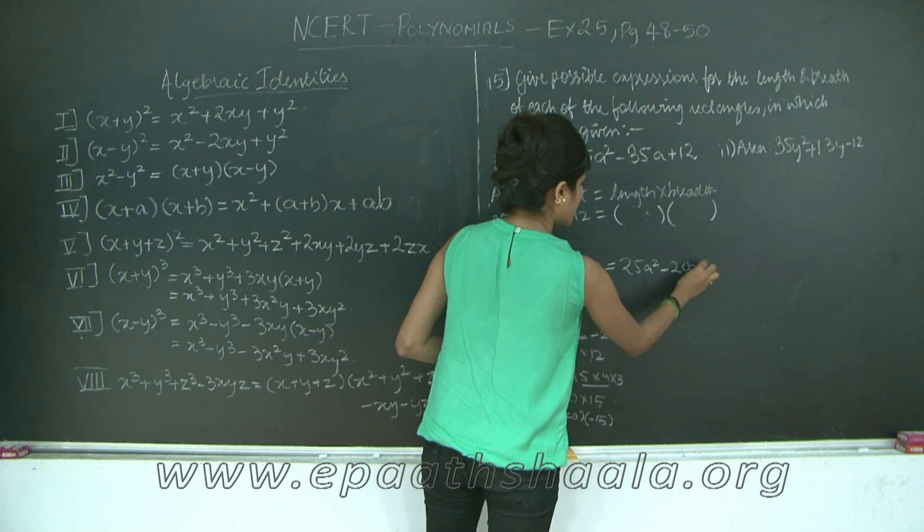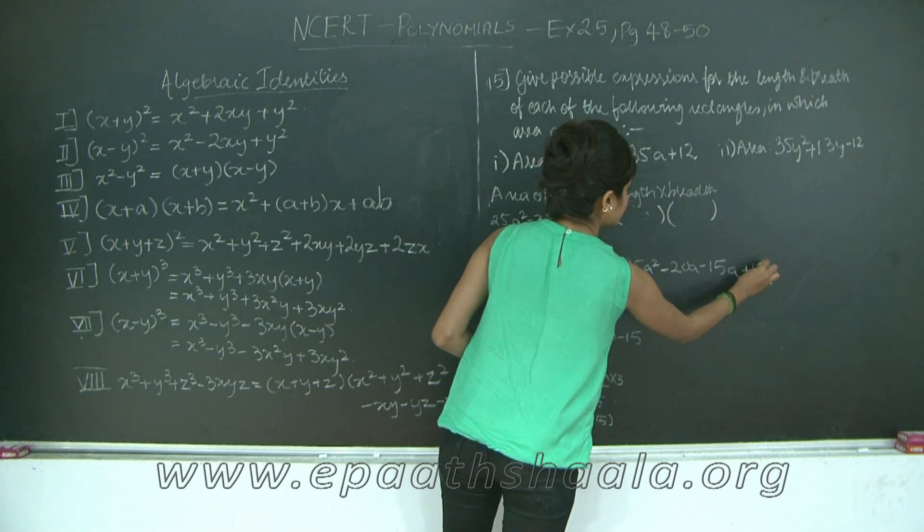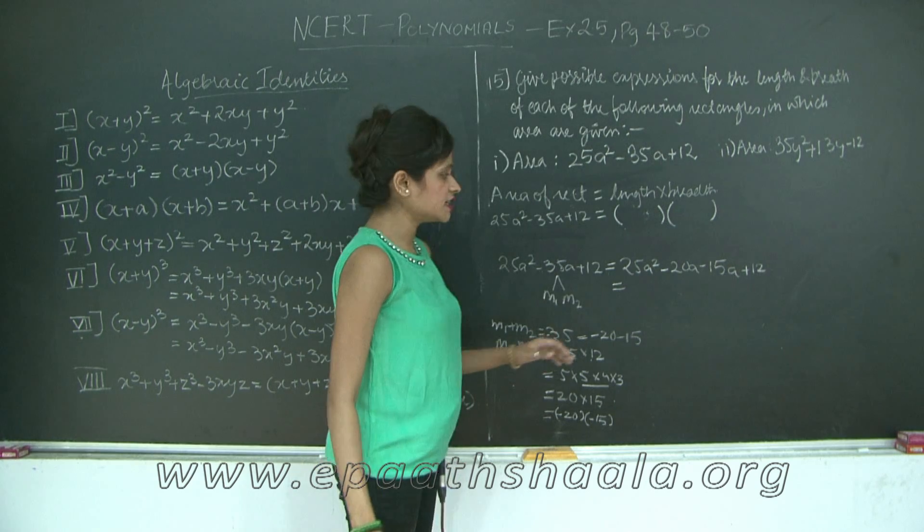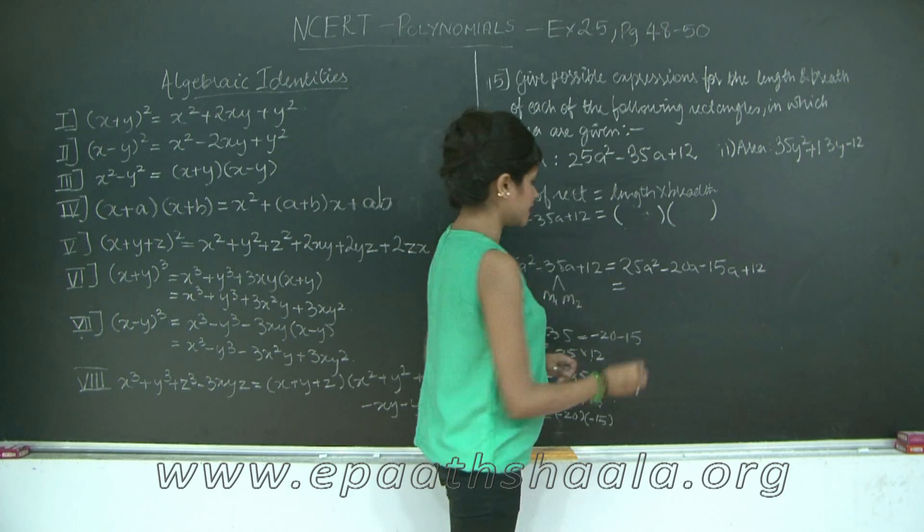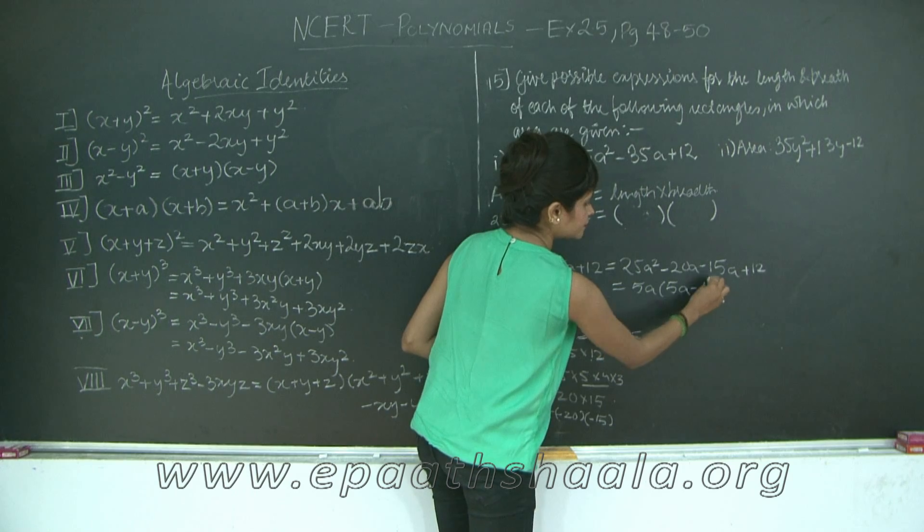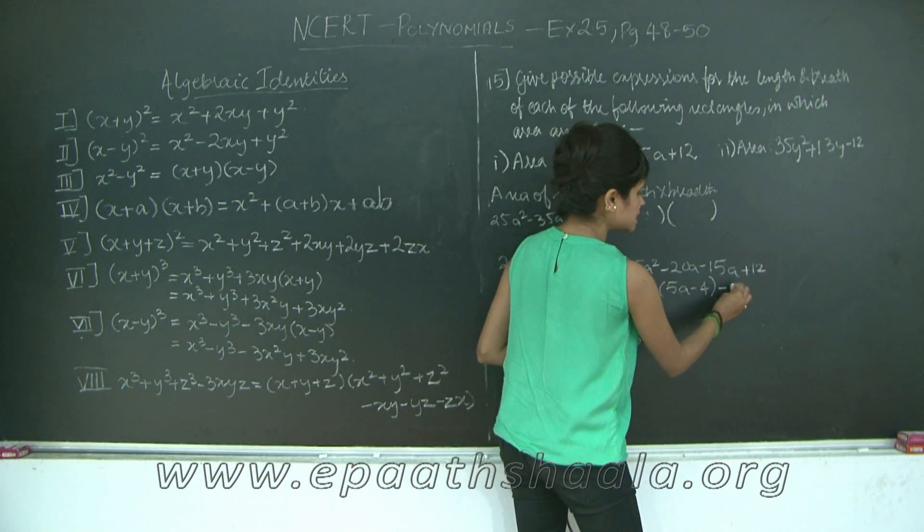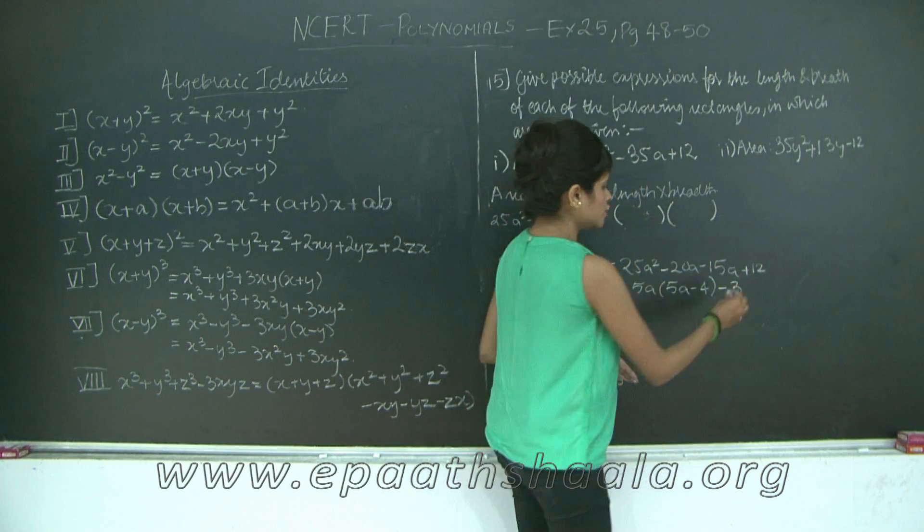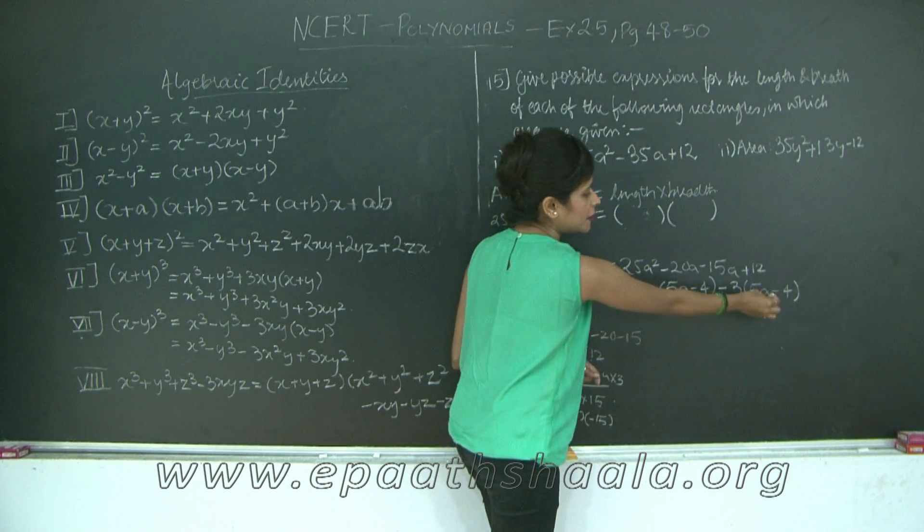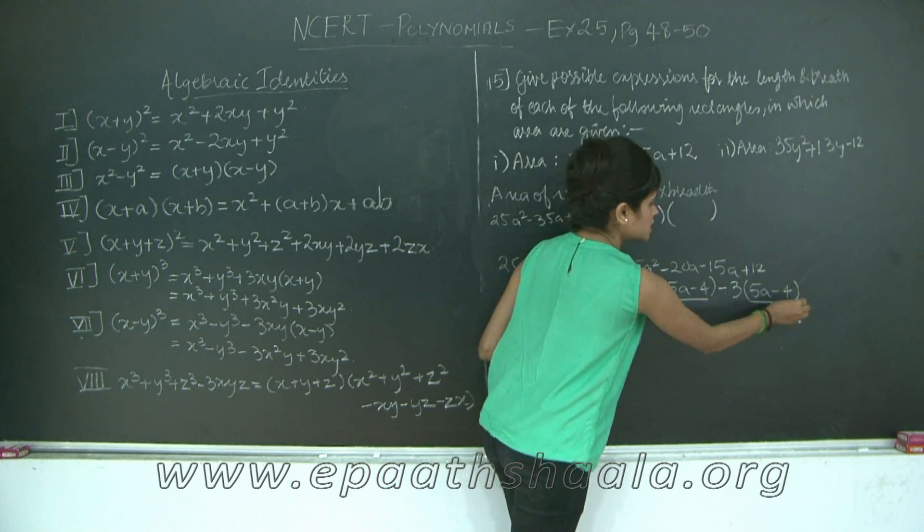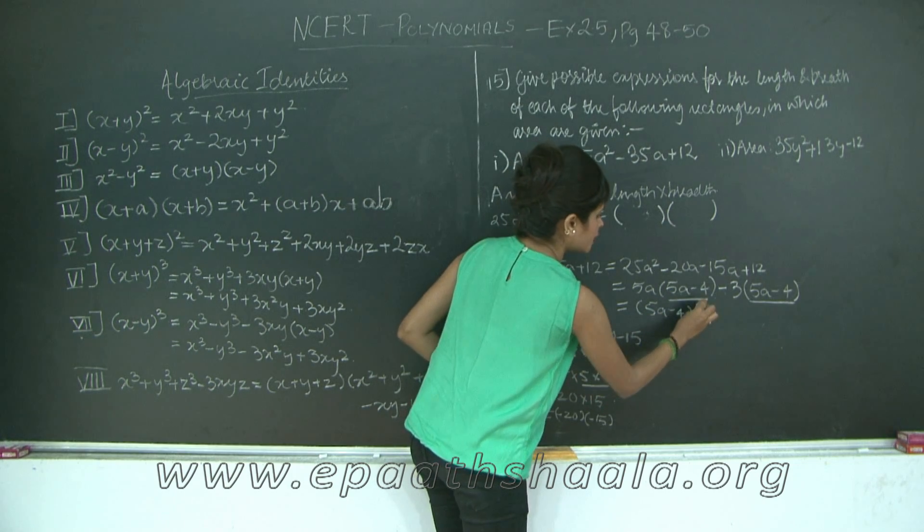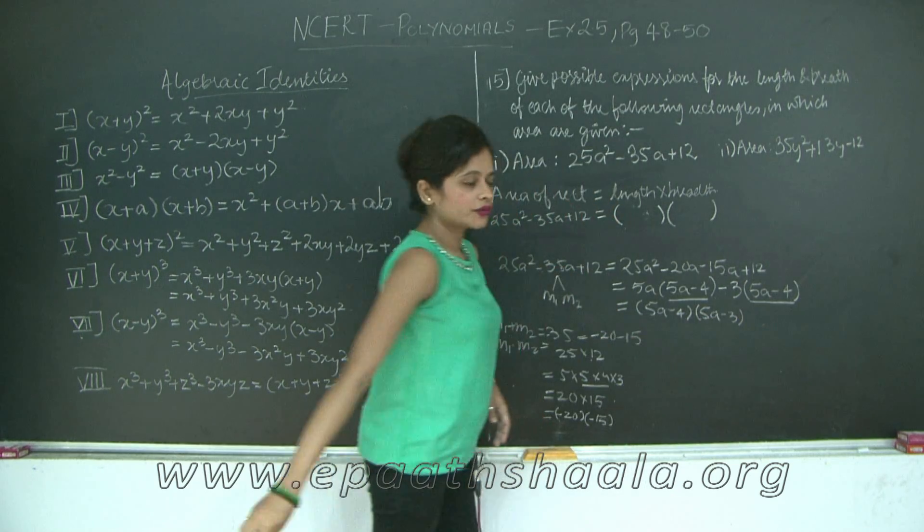this is equal to 25a² minus 20a minus 15a plus 12 factor and now I will remove the common terms. Now what is common between 25 and 20? Of course it is 5 and between a² and a it is a, so 5a, 5×5s are 25, so 5a(5a minus 4) minus 3 because 3 is common between 15 and 12. So 3×5s are 15 into 15a, 3×4s are 12. Now I have taken the negative sign outside therefore the sign becomes negative. Now 5a minus 4 is common for both these terms so I am going to remove 5a minus 4 common so I get (5a minus 4)(5a minus 3). Therefore, I have factorized this term into two products.